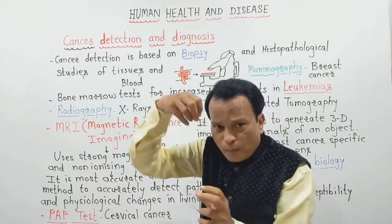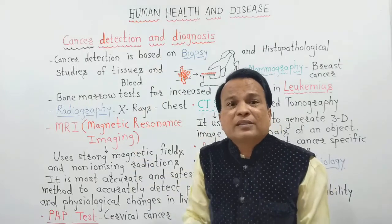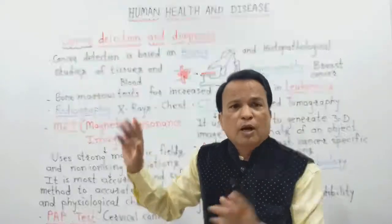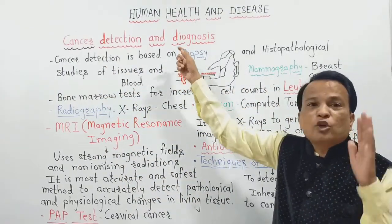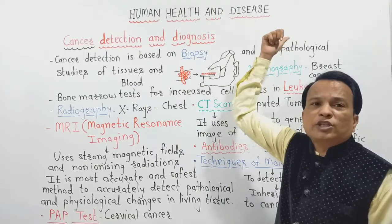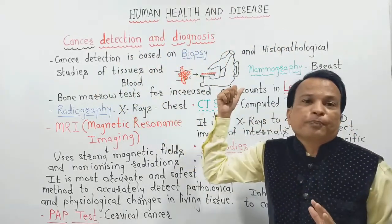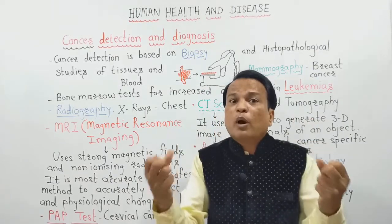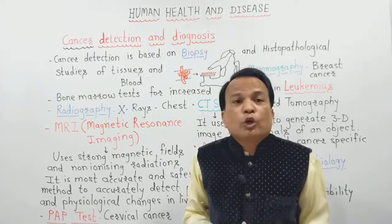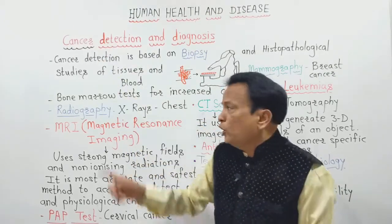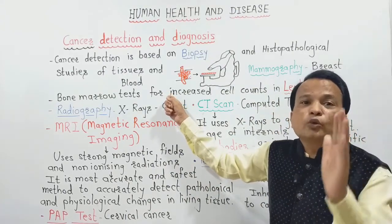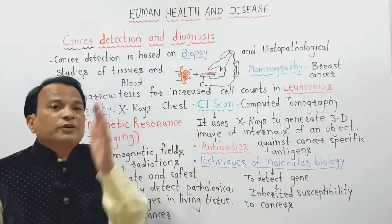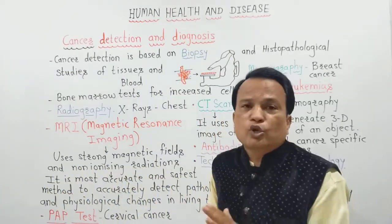After biopsy, the doctor confirms the presence of cancerous or abnormal cells, and then suggests the stage of cancer and whether surgery or operation is needed. This is the best method for detection of cancer, based on biopsy and histopathological studies of affected tissues and blood. Even bone marrow testing helps — a large number of WBCs indicates leukemia. An abnormal, tremendous increase in leukocyte count is an indication of cancer. Bone marrow tests also help in diagnosing these different types of cancers.